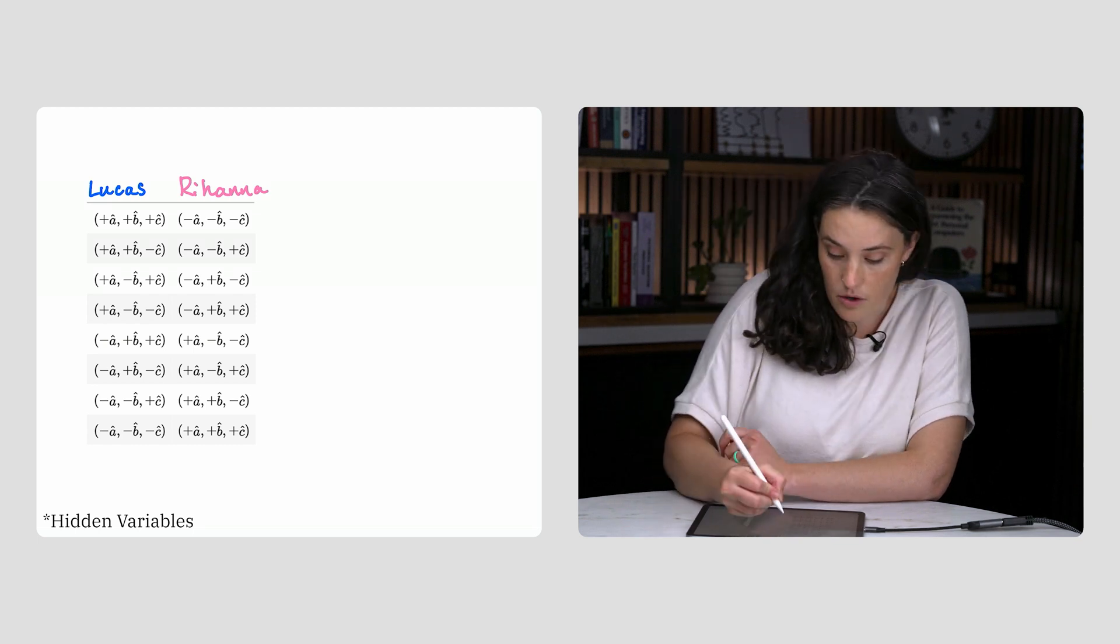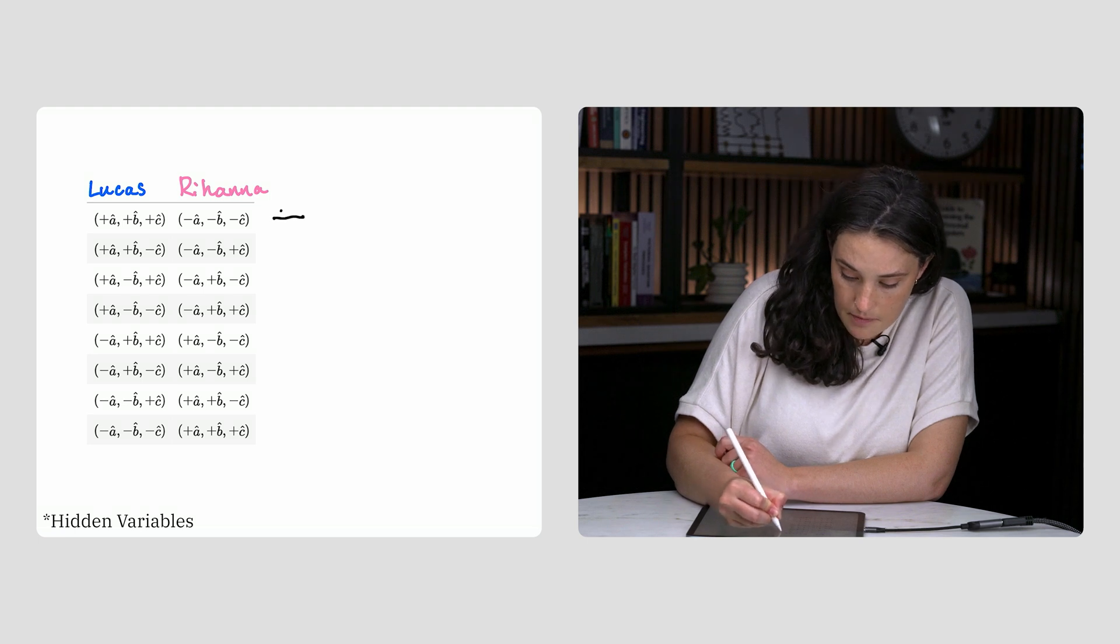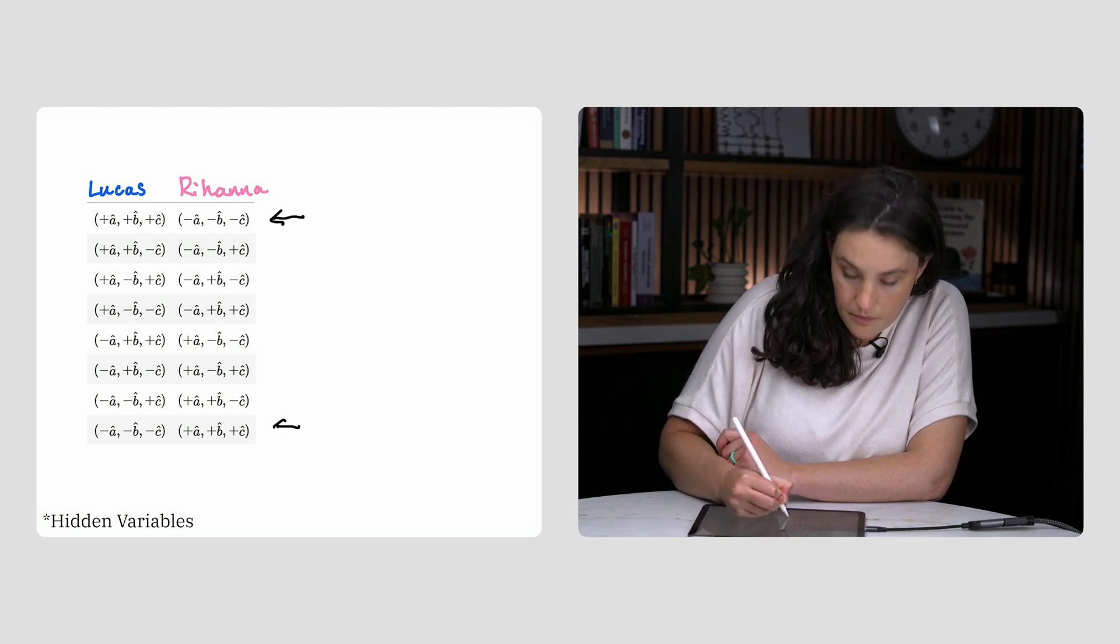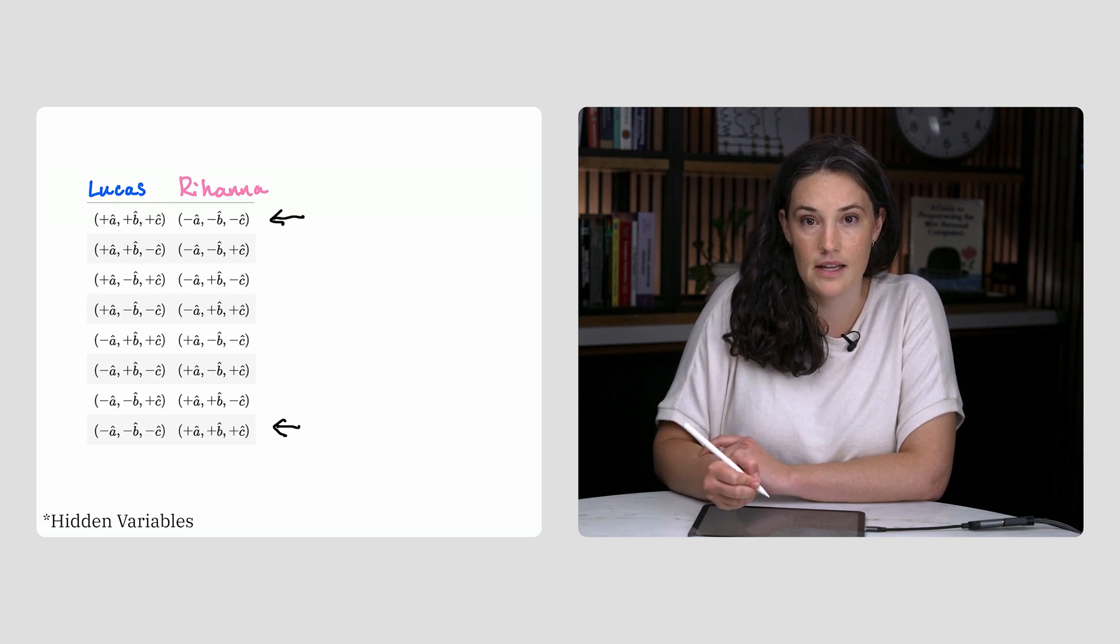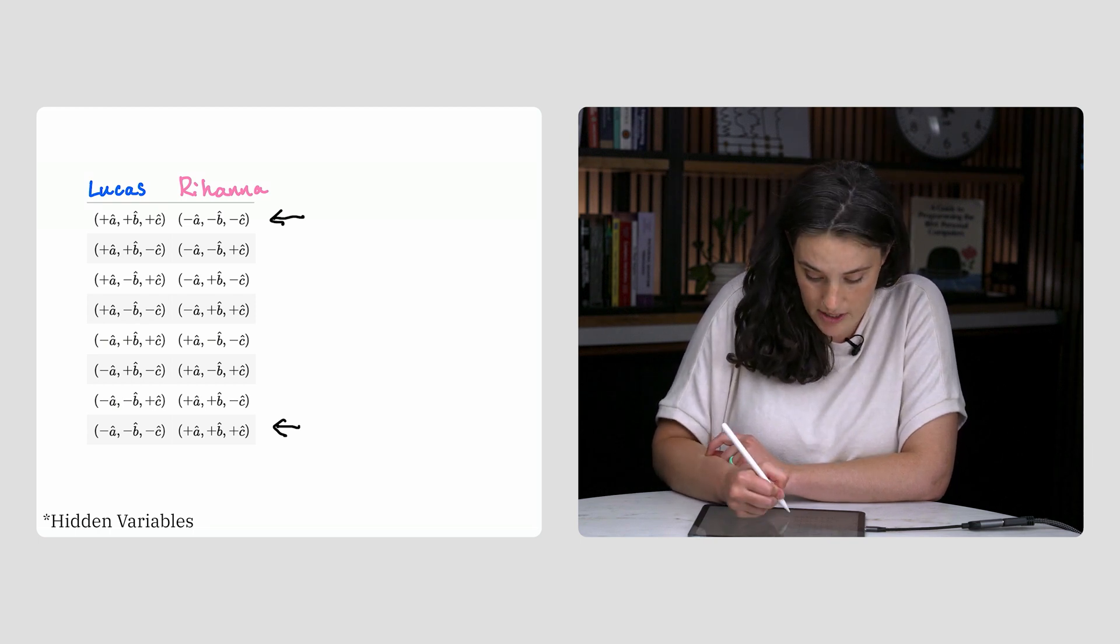If the instructions are those given in rows 1 or 8, then clearly this probability is zero, since the two particles will have the opposite signs regardless of their measurement axes.